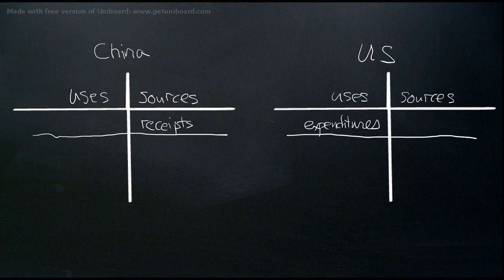I'm showing here the flow of funds accounts of China and the U.S. I'm showing already written in here the trade balances. So here is the Chinese trade surplus and here is the U.S. trade deficit as net expenditures.